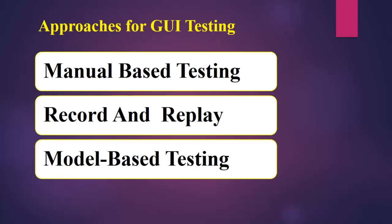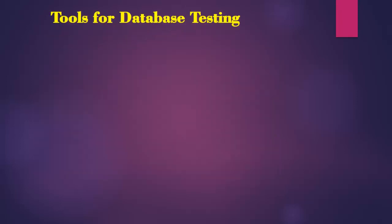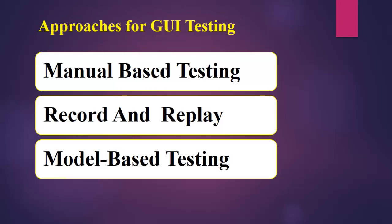Now let's see the approaches of GUI testing. The first one is manual based testing — as per the requirement the tester applies their knowledge and tests the graphical user interface. The second approach is record and replay, which is done using automation tools. During record, test steps are recorded by the automation tool. During playback, the recorded test steps are executed on the application.